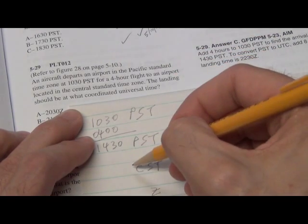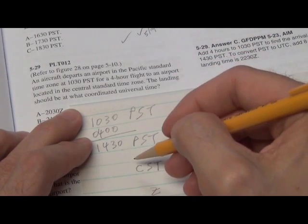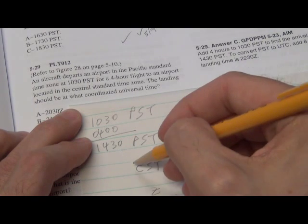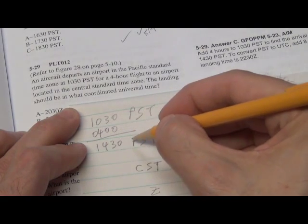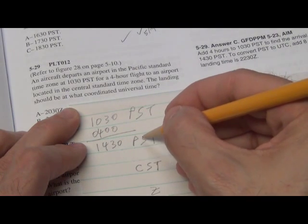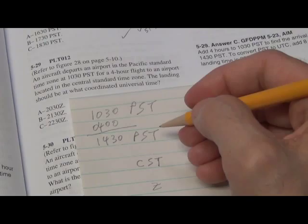But first, we have to convert to the local time at the airport he landed at, which was in Central Standard Time. So we know in Pacific Standard Time, he landed at 1430. We're going to simply convert from Pacific Standard to Central Standard. And how do we do that?